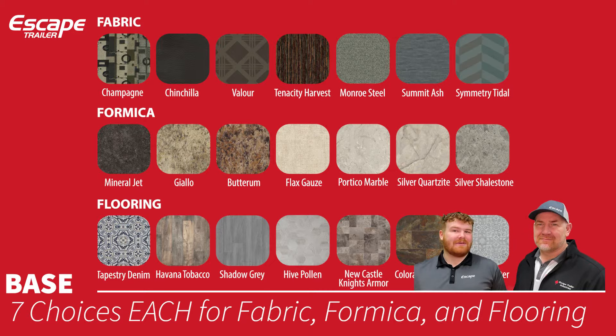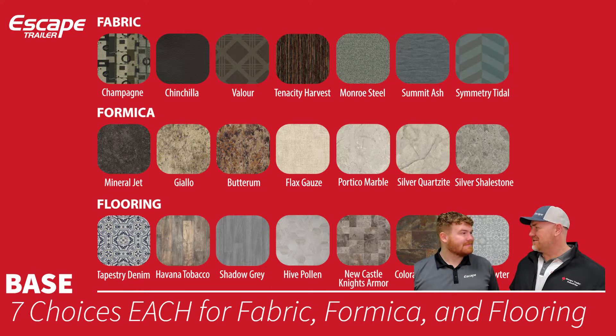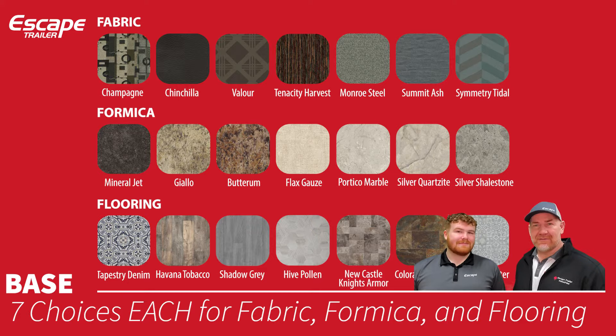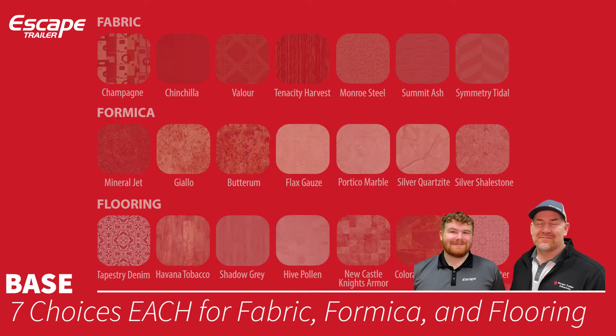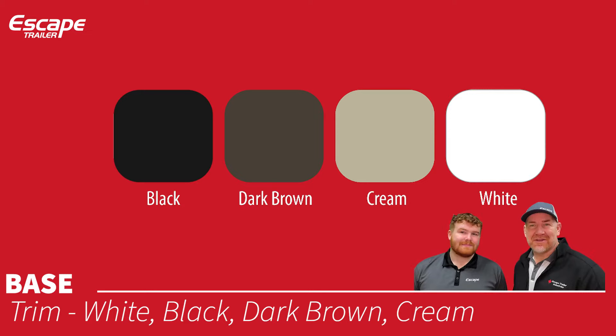Up until a couple of years ago there was only one choice of fabric and flooring, but we brought out seven different choices and it's all within the base price of the trailer. For trim — which goes around your countertops, tabletop, and counter extensions — we have four color choices: black, cream, dark brown, and white. For decals on the exterior we have 17 different color choices, or you can have none at all.